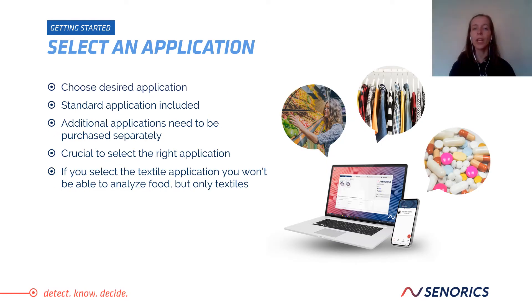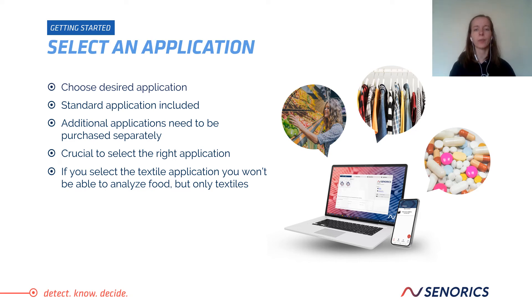Following the successful calibration, you will need to choose your desired application. There is one standard application already included when you purchase the ZenoCoder. The textile application enables you to identify silk, wool, cotton, and polyester. Any additional applications need to be purchased separately. It is crucial that you select the right application, as this is the only way to ensure that the ZenoCoder can successfully identify and quantify the analyzed materials. For example, if you select a textile application, you won't be able to analyze food — you will only be able to analyze textiles.